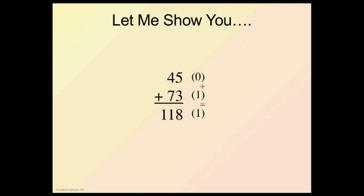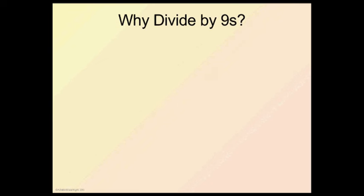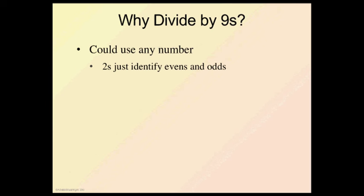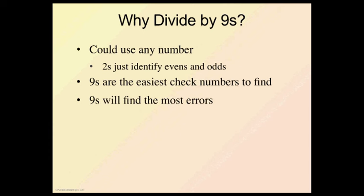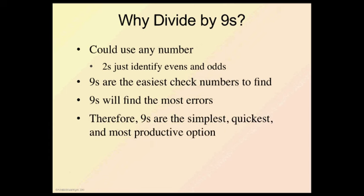Now we found all of our digits. Now we're going to check to make sure we've got the right answer. So 1 plus 0 is 1, and I've got a right answer. So some people have asked, why do we divide by nines? We could use any number. For example, if we were to use twos, that would just simply identify evens and odds, not very productive. You could do it, but it's not as helpful as we'd like it to be. So nines are the easiest check number to find, and they will find the most errors. Therefore, nines are the simplest, quickest, and most productive option.